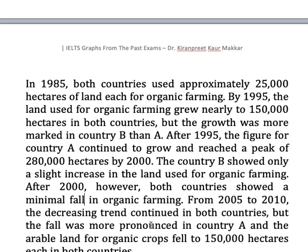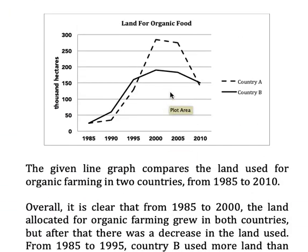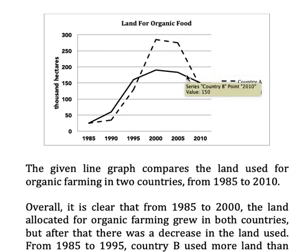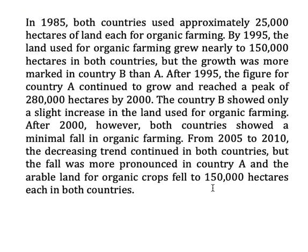The fall was more pronounced in country A, and the arable land for organic crops fell to 150,000 hectares each in both countries. From 2005 to 2010, the fall continued but it was more pronounced in country A than country B. By 2010, both countries were doing organic farming in 150,000 hectares. There was a minimal drop in organic farming — you can say 'decrease,' 'fall,' or 'drop.'